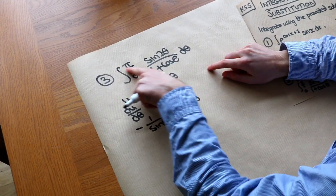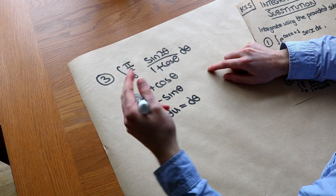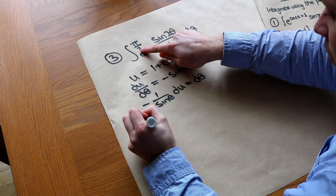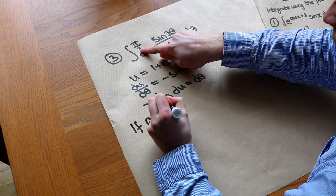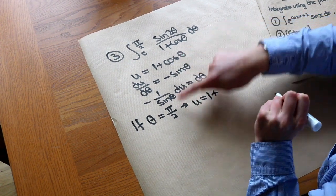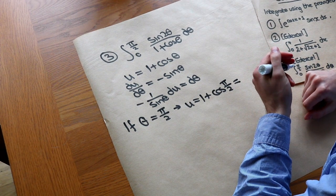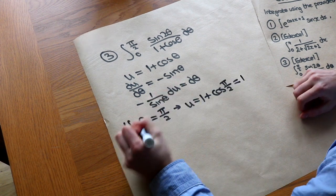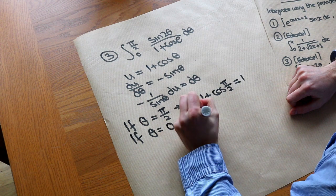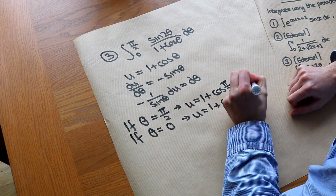Changing the limits: when θ equals π/2 (the top limit), u equals 1 plus cos(π/2). Cos(π/2) is cos 90 degrees, which is 0, so u equals 1. When θ equals the bottom limit of 0, u equals 1 plus cos(0) equals 1 plus 1 equals 2. So the new limits are 1 on top and 2 on the bottom.